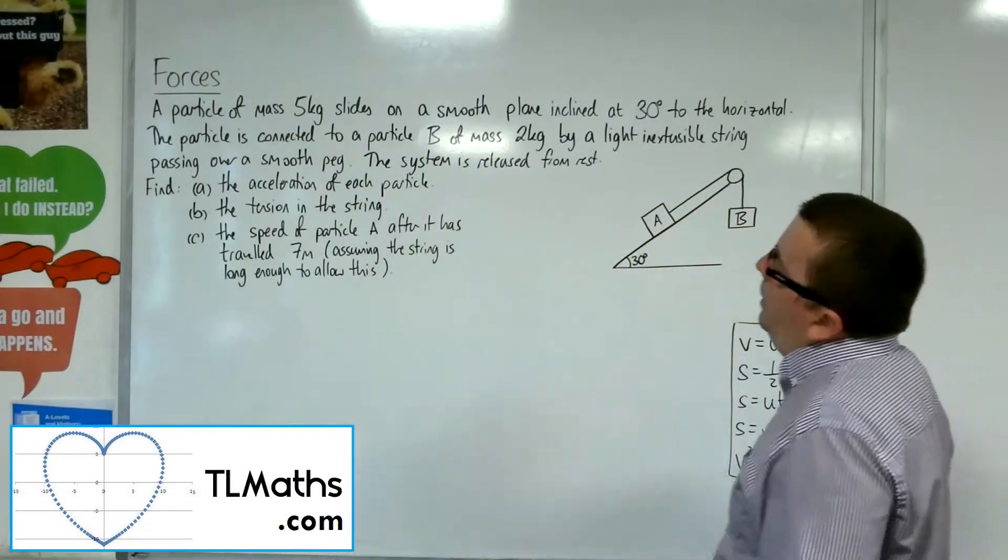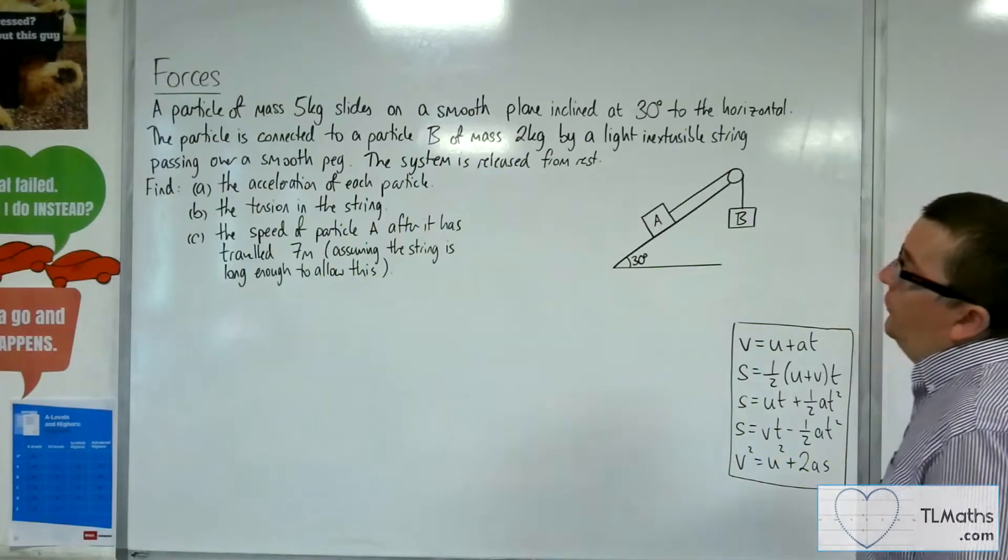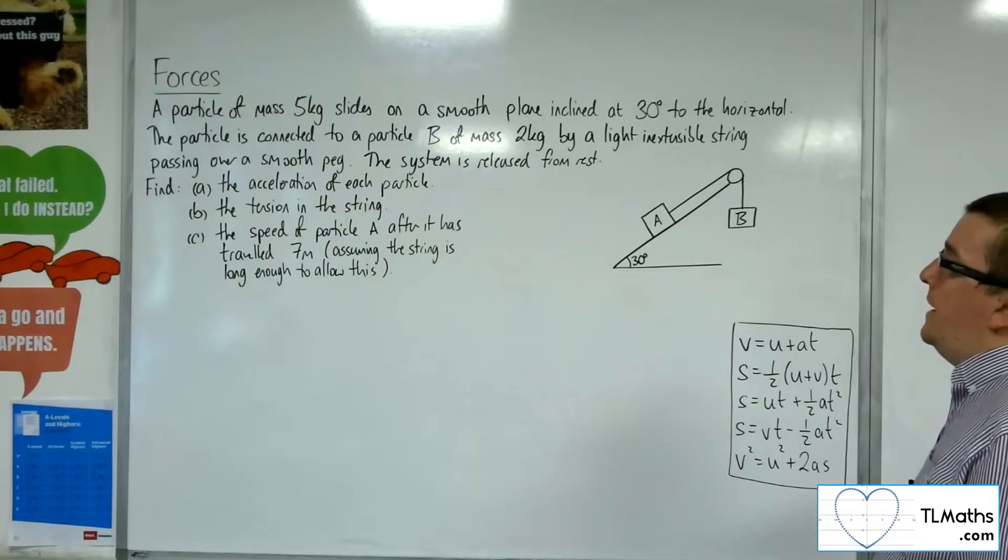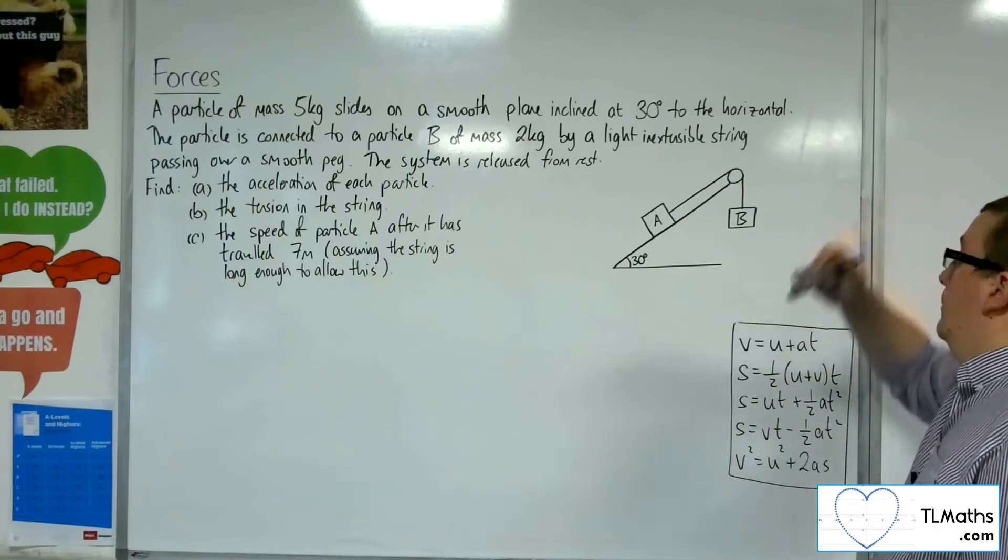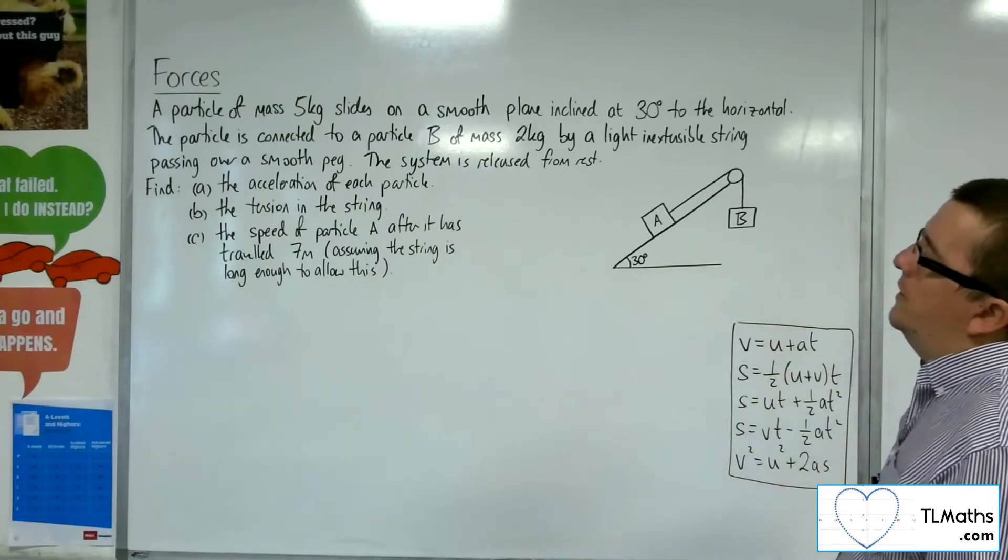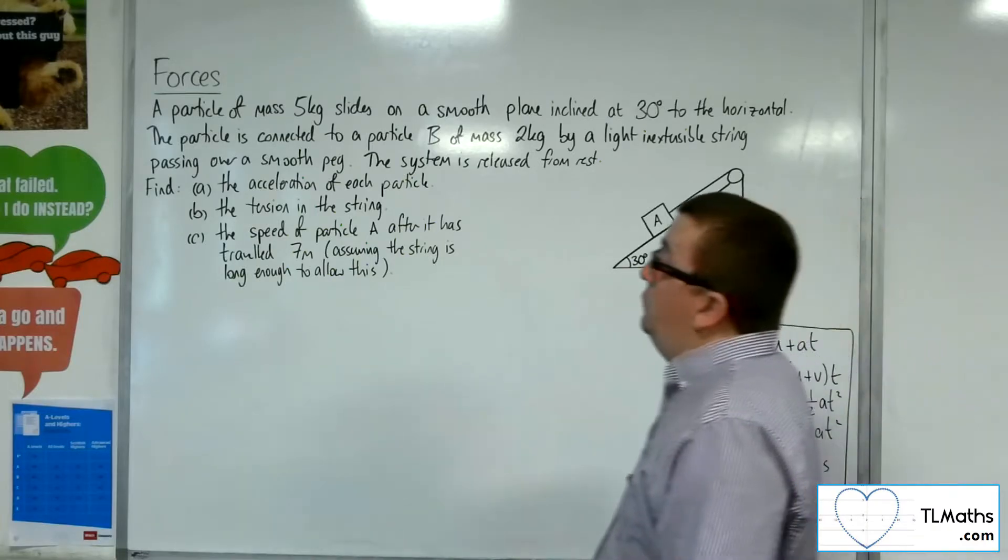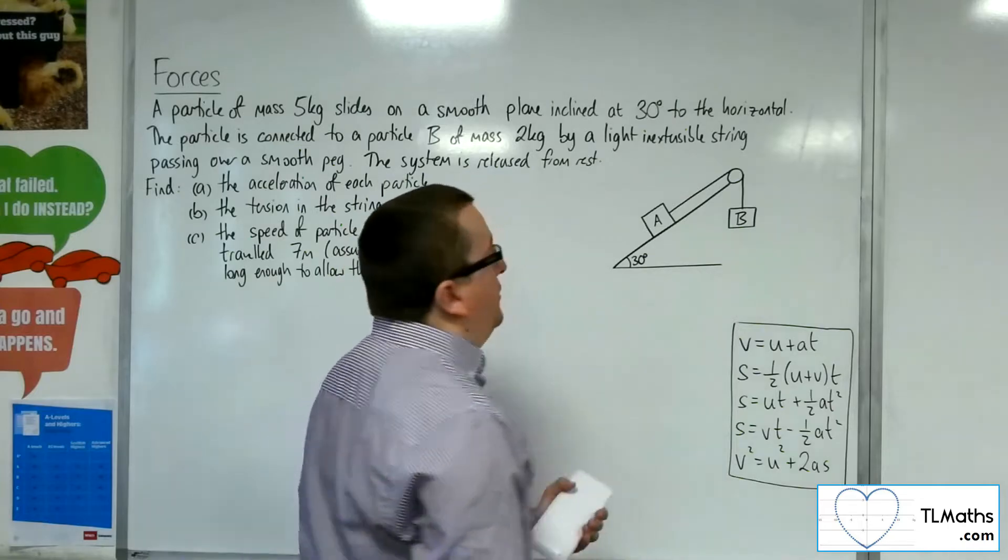In this pulley problem, we've got a particle of mass 5 kilos sliding on a smooth plane inclined at 30 degrees to the horizontal. The particle is connected to a particle B of mass 2 kilos by a light, inextensible string passing over a smooth peg. The system is released from rest. First of all, find the acceleration of each particle.